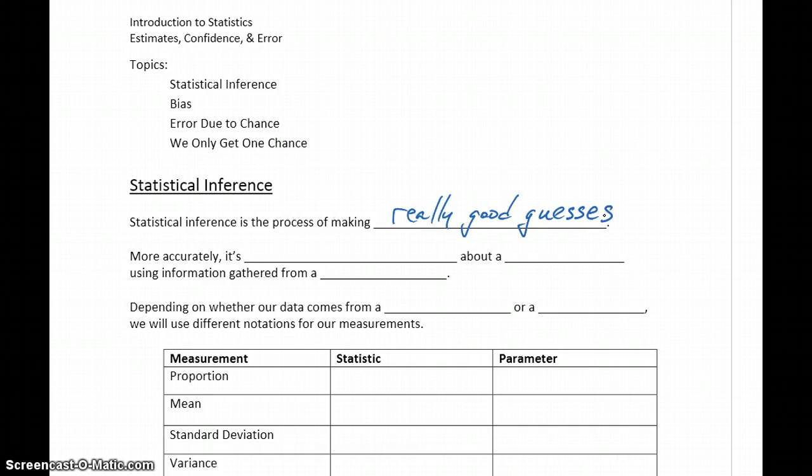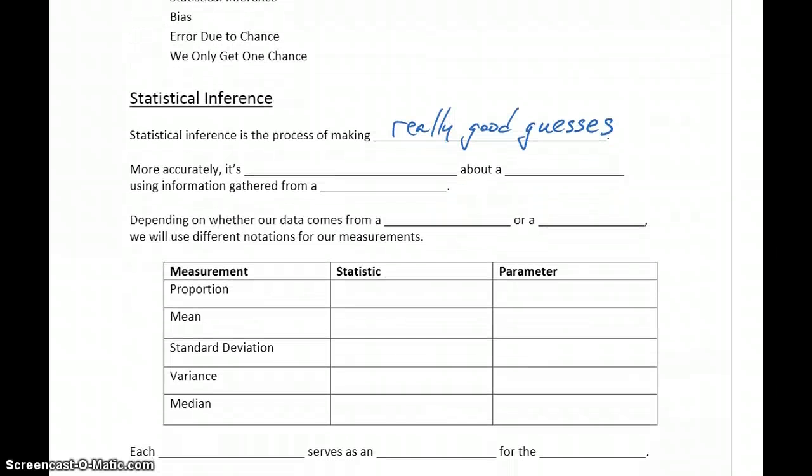In the end result, we're never going to know if our estimates end up being correct or incorrect. We're just going to be coming to the strongest conclusions we can based off the data we have available. More accurately, statistical inference is the process of drawing conclusions about a population based off sample data.